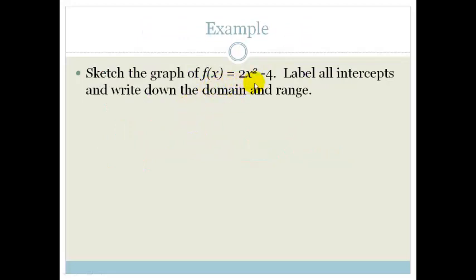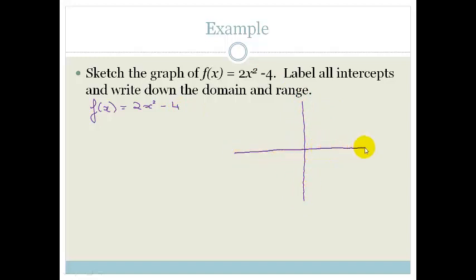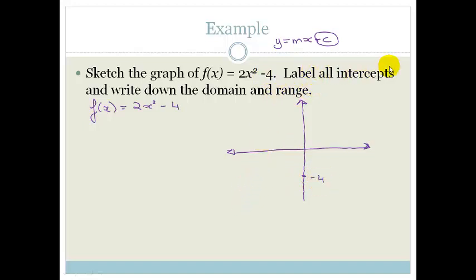Now we're asked to sketch the graph of f of x equals 2x squared minus 4, label all the intercepts, and write down the domain and range. From the standard form, we know this minus 4 means the graph cuts the y-axis at minus 4.